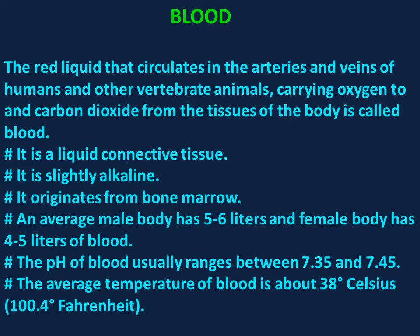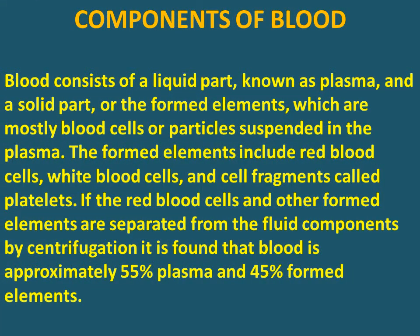The pH of blood usually ranges between 7.35 and 7.45. The average temperature of blood is about 38 degrees Celsius or 100.4 degrees Fahrenheit. Blood consists of a liquid part known as plasma and a solid part or formed elements, which are mostly blood cells or particles suspended in the plasma. The formed elements include red blood cells, white blood cells, and cell fragments called platelets. Blood is approximately 55 percent plasma and 45 percent formed elements.